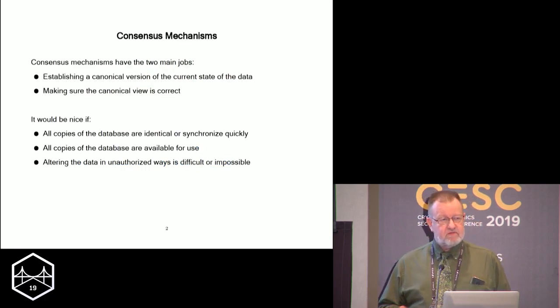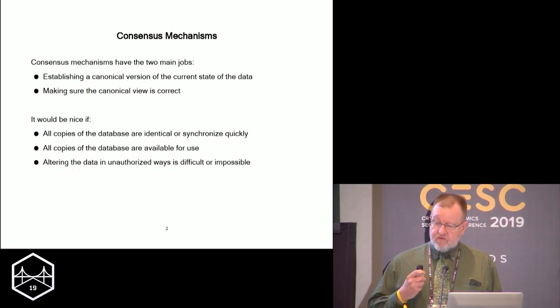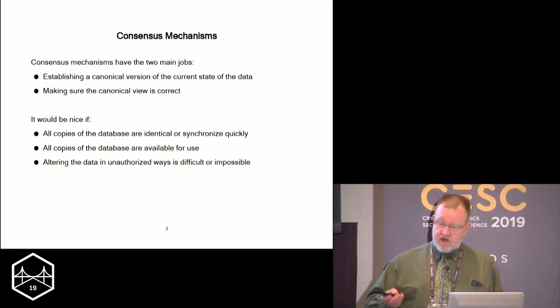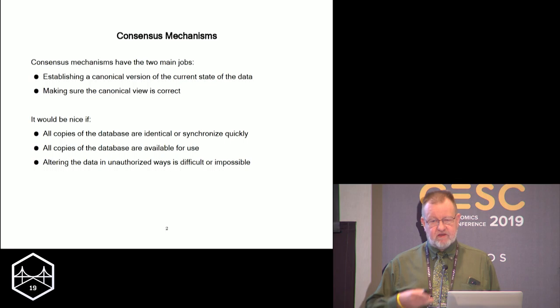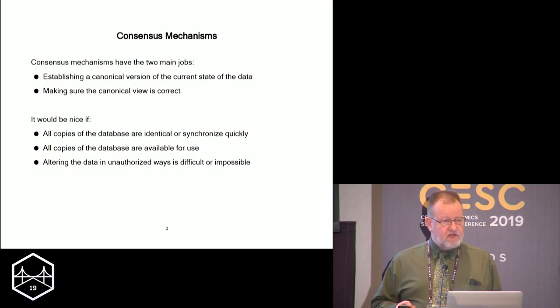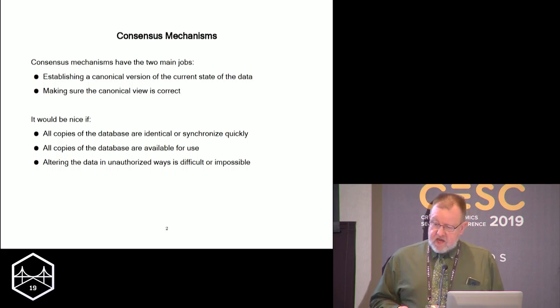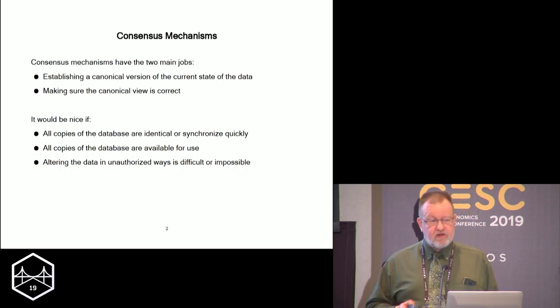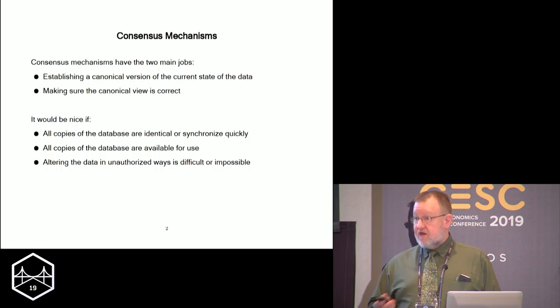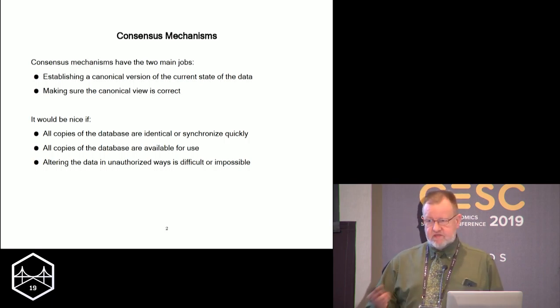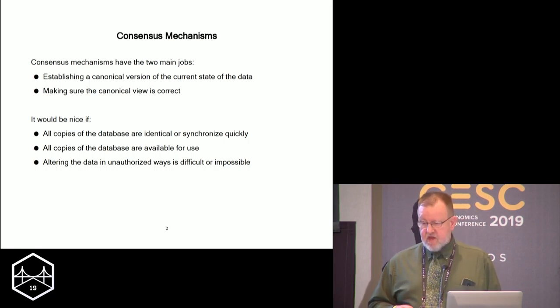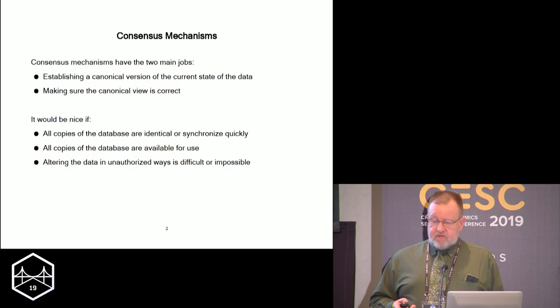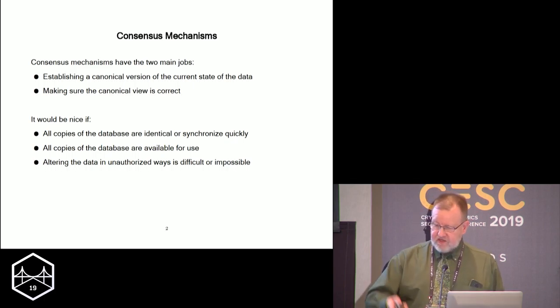Consensus mechanisms really have two fundamental jobs. We're trying to establish a canonical version of a data set — something that we can all agree and understand is the state of the world. We're also trying to assure that that canonical version is a correct version. It follows the rules. It does things that we want it to do. It'd also be great if it had other properties you see listed there.